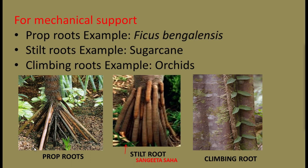Now coming to the climbing root. These roots are also aerial adventitious roots, and they arise from the nodes or inter-nodes of the plants. They are found in orchids and help the plant take support to expose their leaves efficiently to sunlight. This was all about the root. In the next lesson we are going to study the morphology of stem. Till then, study well. Thank you.